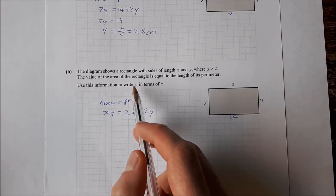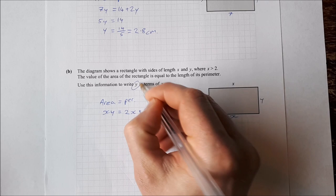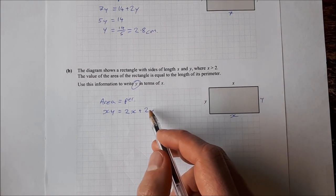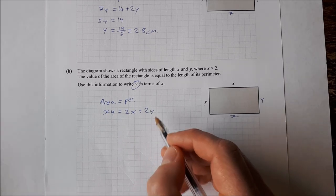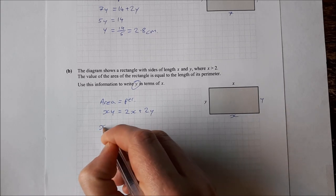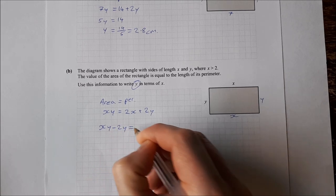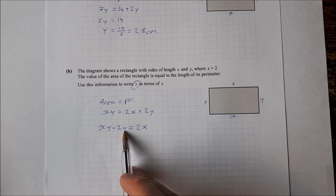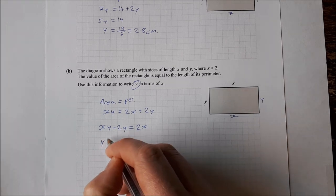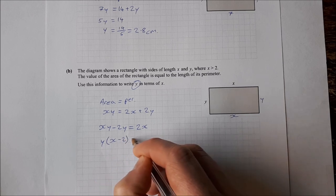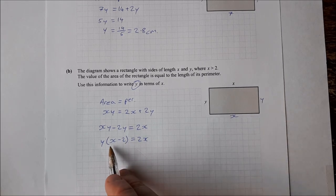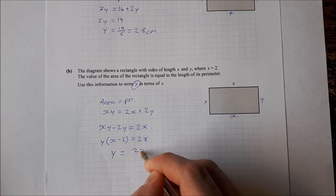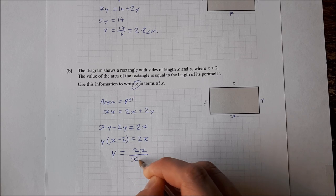Now, I want to write y in terms of x. So basically, that means isolate y. So if you want to isolate y, you need to get everything with y to one side. So, take 2y from both sides. You get xy minus 2y is equal to 2x. To isolate y, then, factor out y. So y times x minus 2 is equal to 2x. And then, to get y on its own, divide by this here. y is equal to 2x over x minus 2.